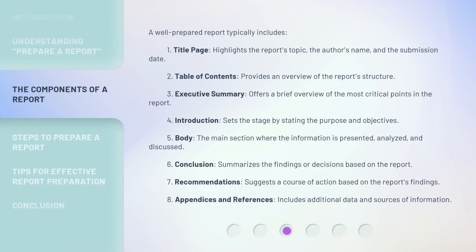A well-prepared report typically includes: 1. Title Page — highlights the report's topic, the author's name, and the submission date. 2. Table of Contents — provides an overview of the report's structure. 3. Executive Summary — offers a brief overview of the most critical points in the report.